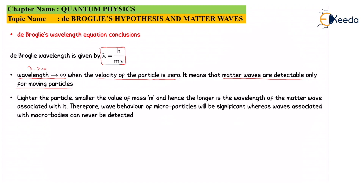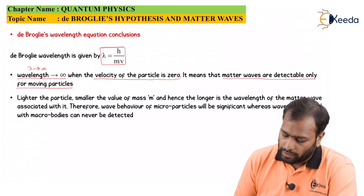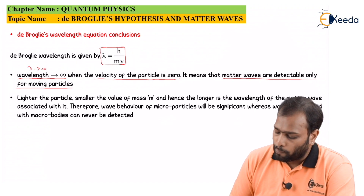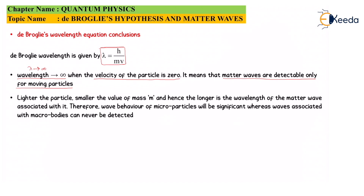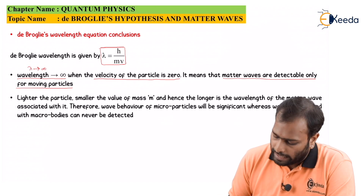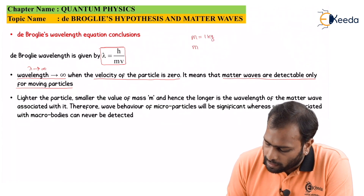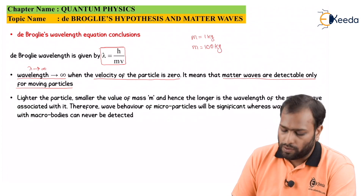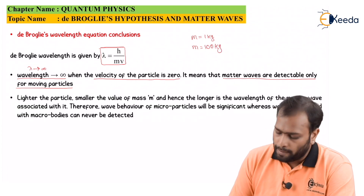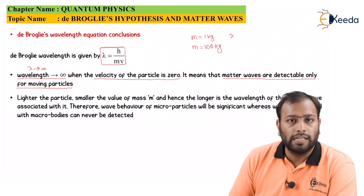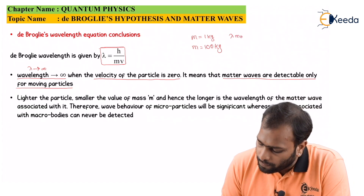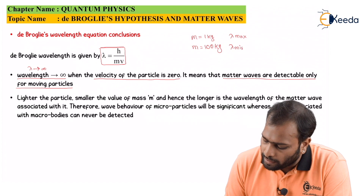The second conclusion: lighter the particle, smaller is the value of mass. As the particle becomes lighter, m reduces and hence the wavelength of the matter wave becomes longer. As m reduces, λ becomes longer. Therefore, the wave behavior of microparticles will be significant, whereas waves associated with macro bodies can never be detected. For example, for a 1 kg mass, λ will be maximum, and for a 100 kg mass, it would be minimum.